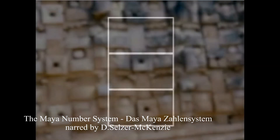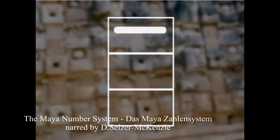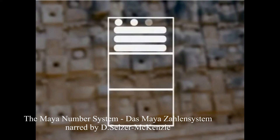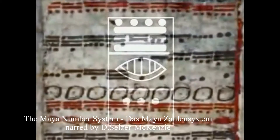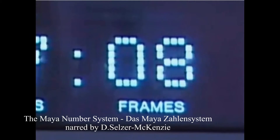At first glance, Maya numbers don't look very complicated at all. A series of dots and bars, they appear to be basic and primitive. But don't be fooled by the simplicity of these symbols. The Maya created a number system that is as sophisticated and complex as our own. To understand how the Maya did math, it is important to look at our own system first.